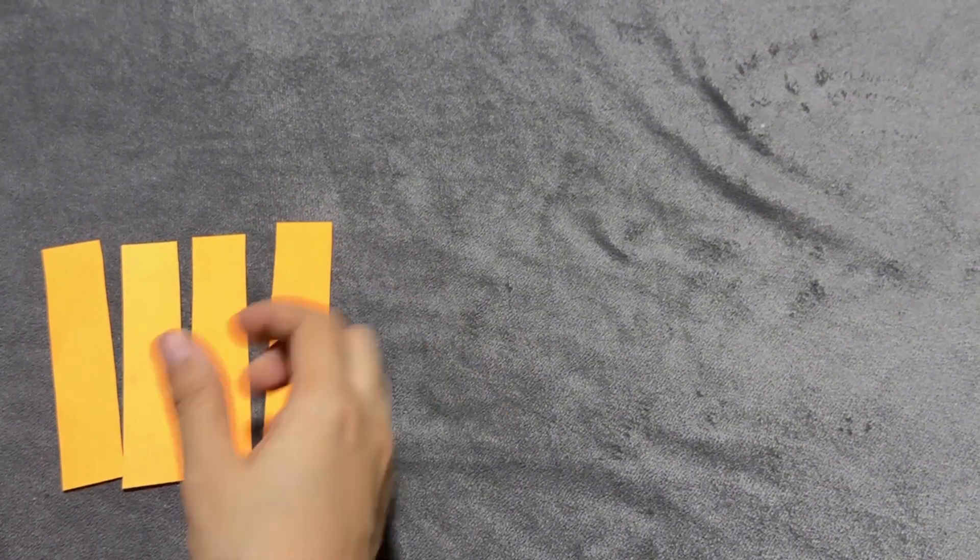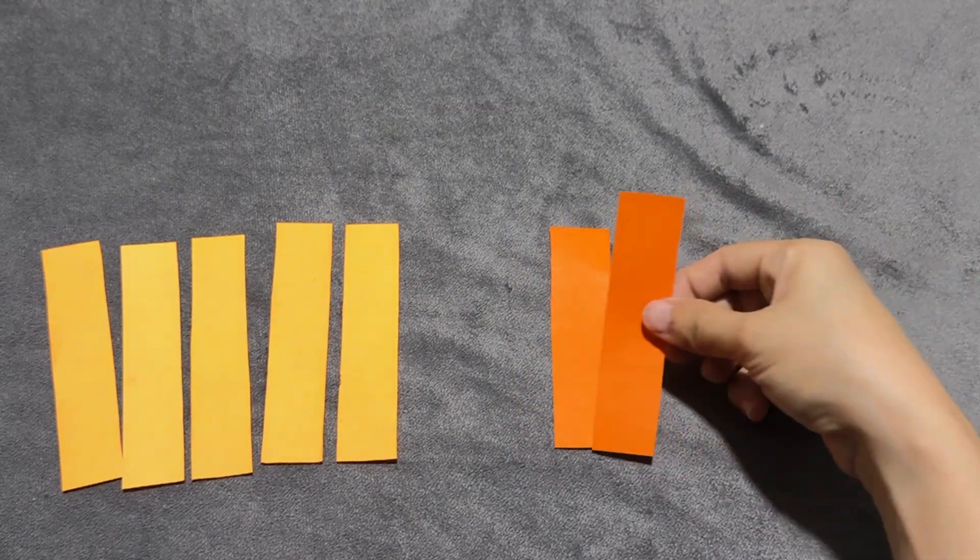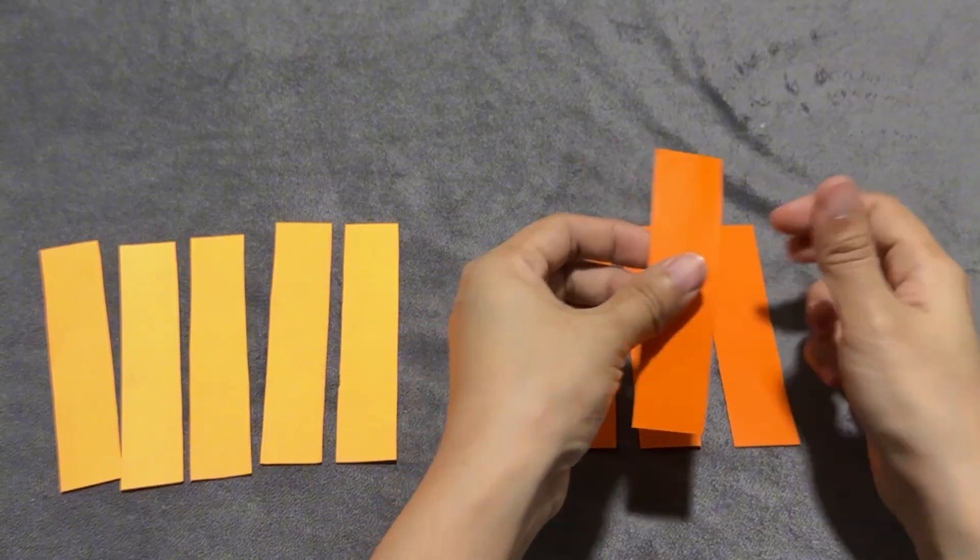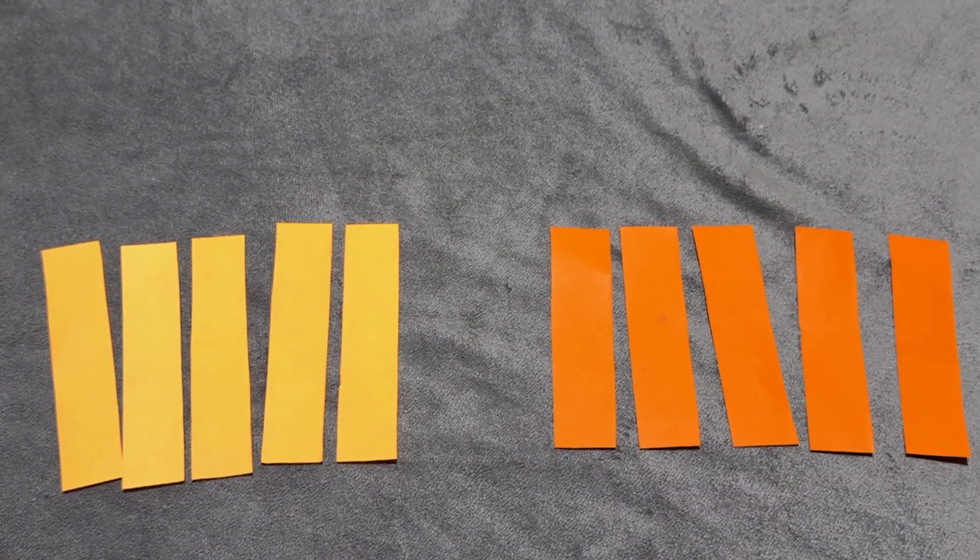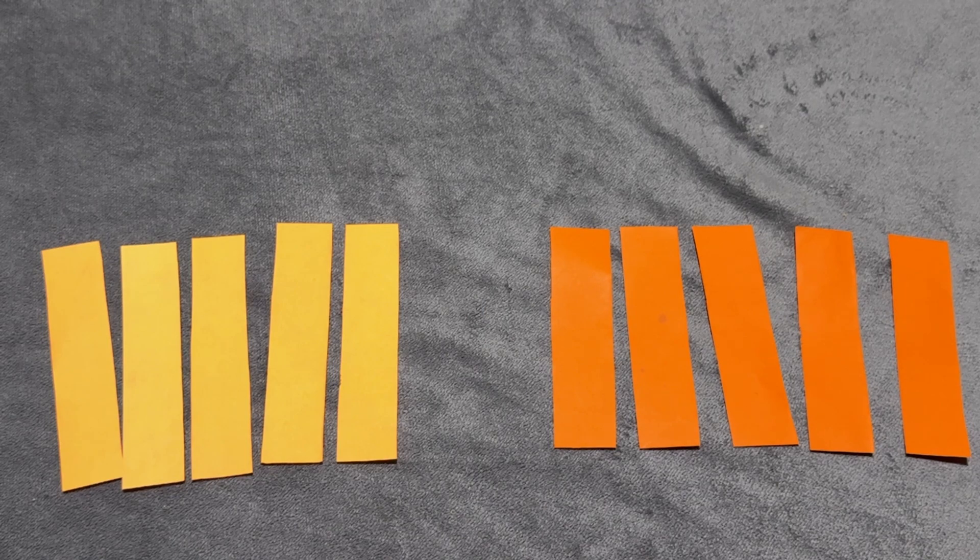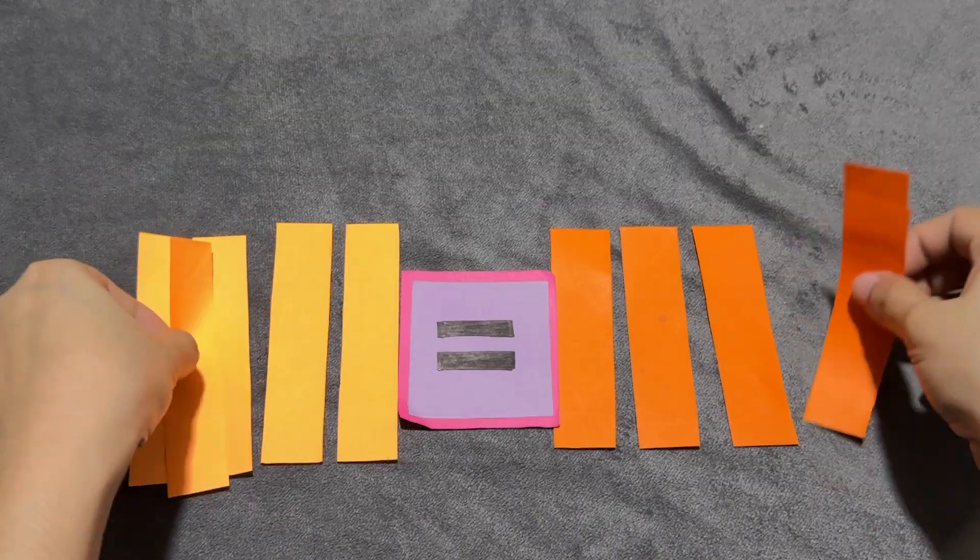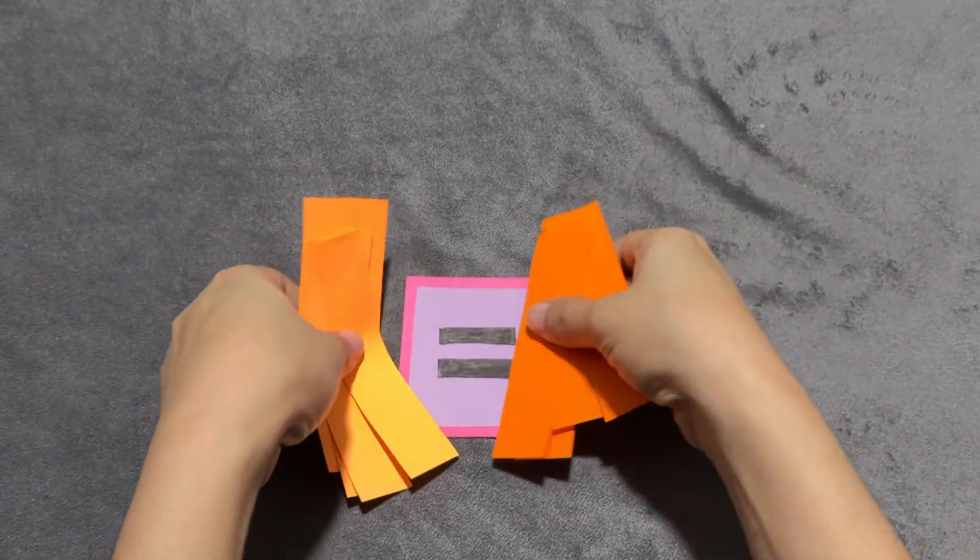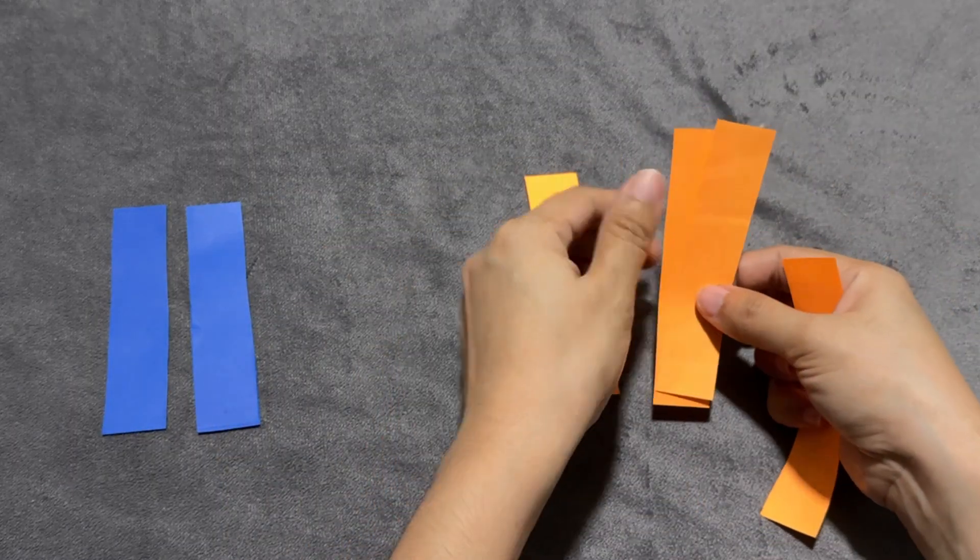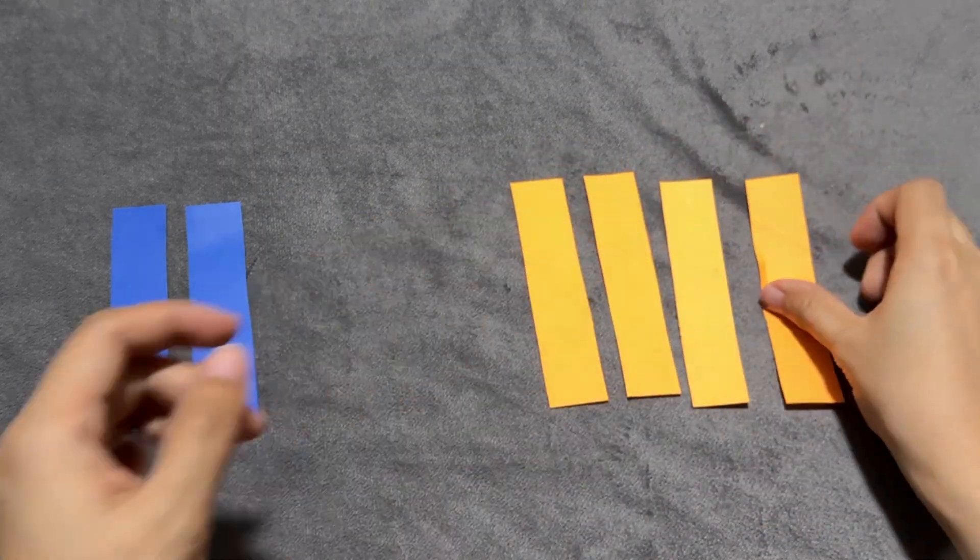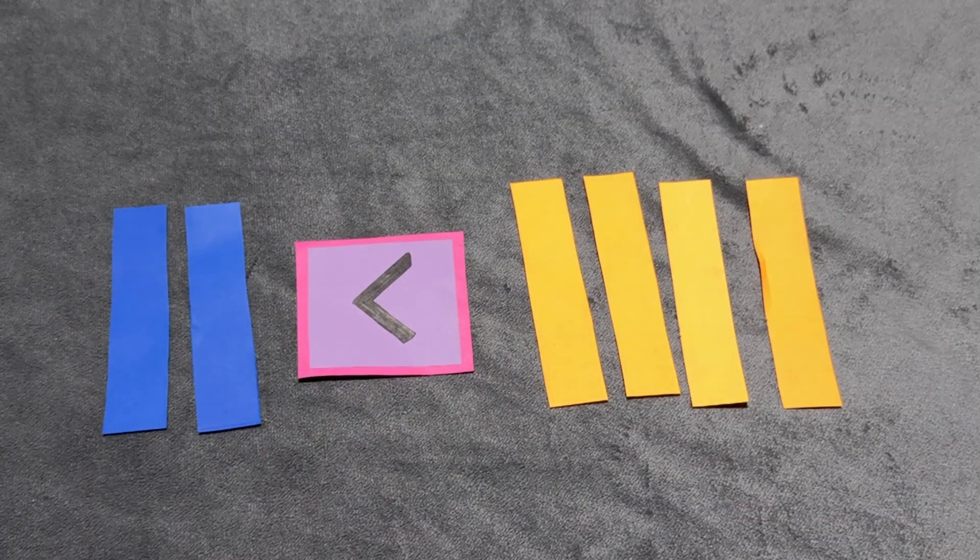5, 5, 5. Five is equal to five. 2, 4. Two is less than four.